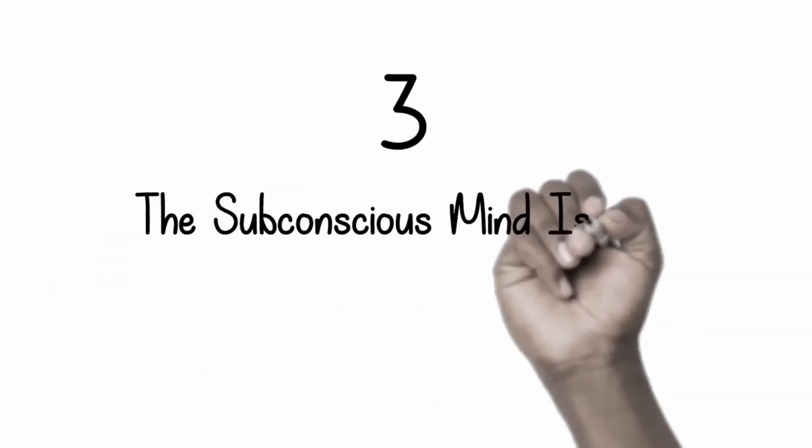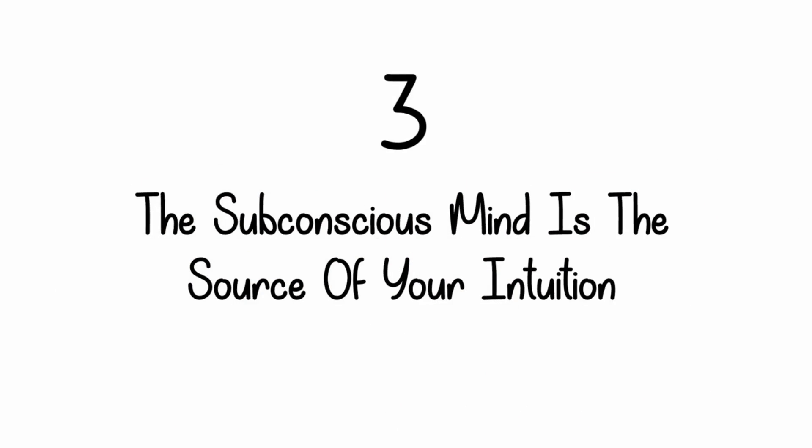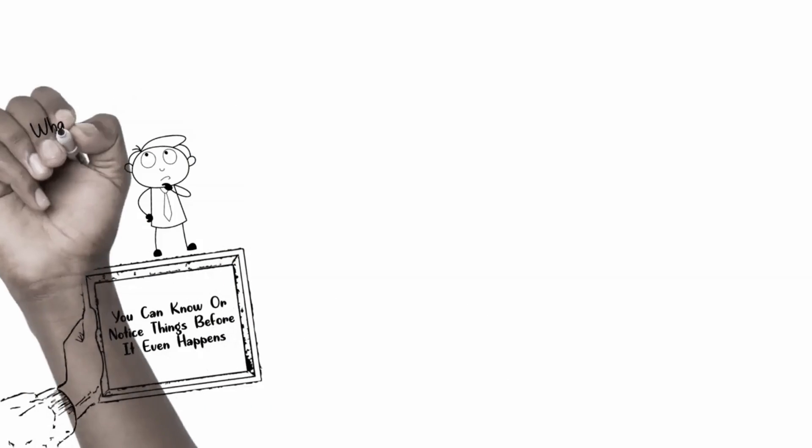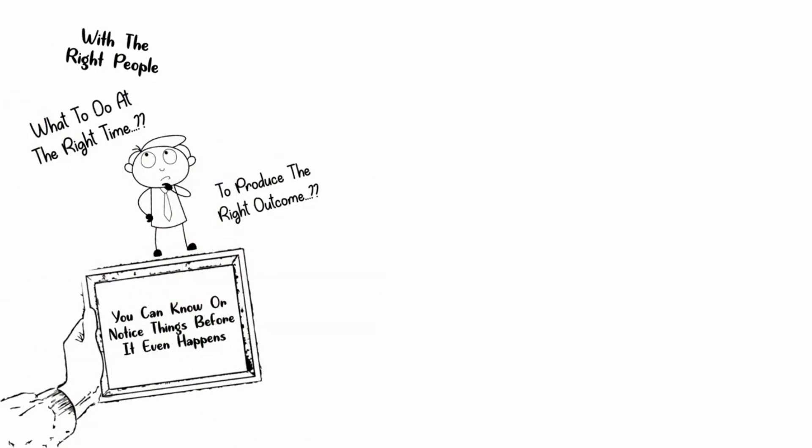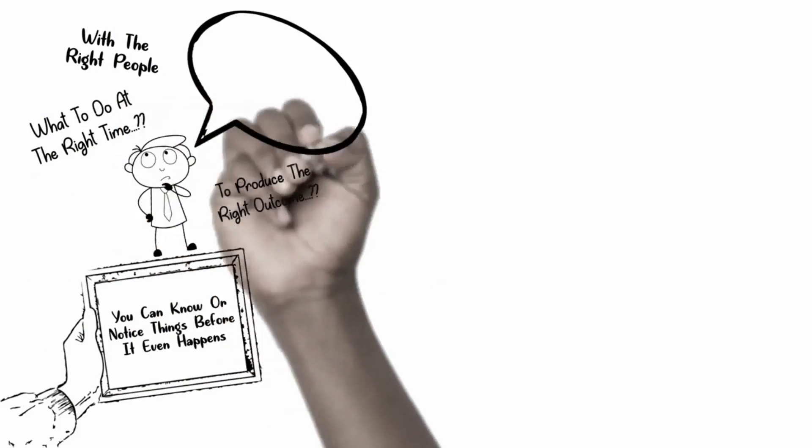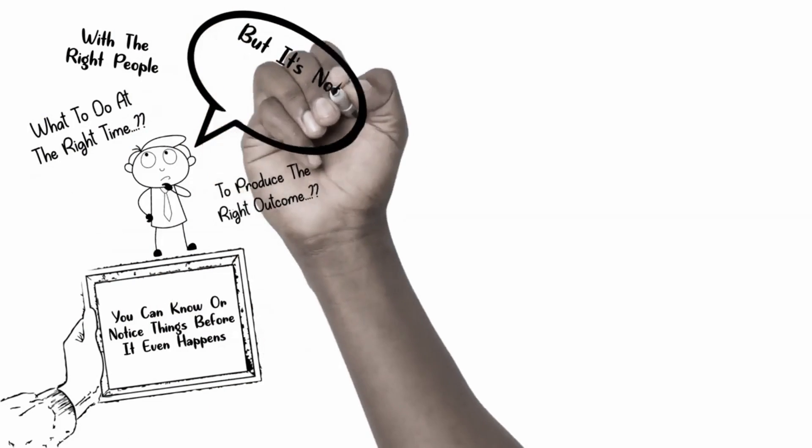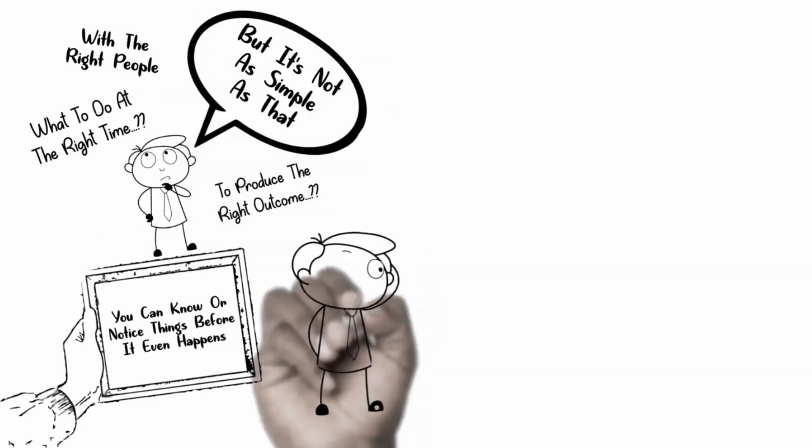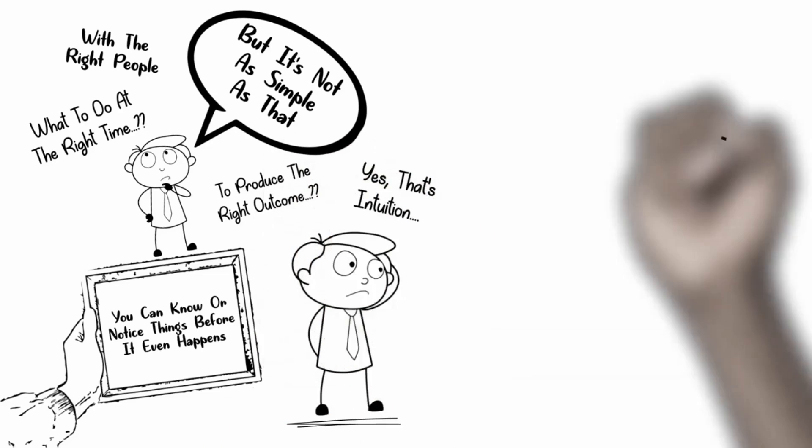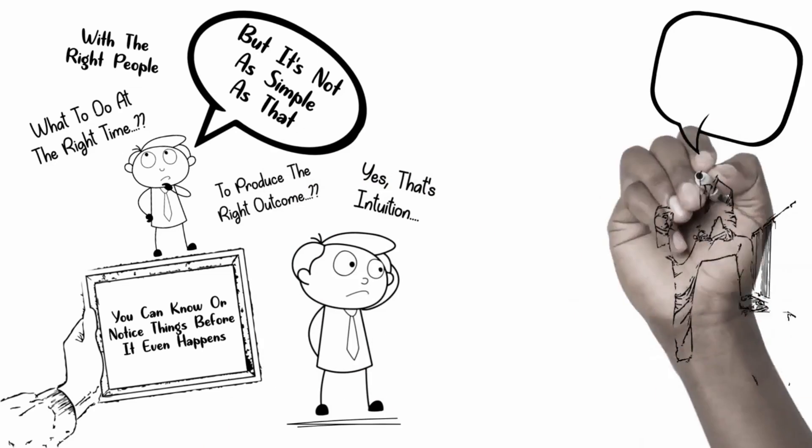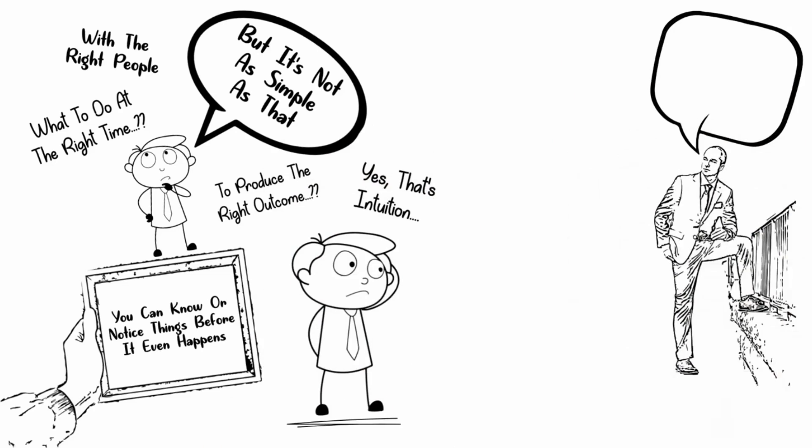3. The subconscious mind is the source of your intuition. As your intuition grows stronger, you can know or notice things before they even happen. Has it ever happened to you that you just know what to do at the right time with the right people to produce the right outcome? Listen, you might think that you're lucky, but it's not as simple as that. A lot of times, that is your hunch. Yes, that's intuition. I want to guess where that intuition comes from? Yep, it's your subconscious mind.